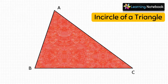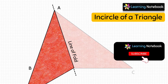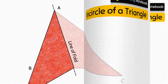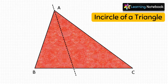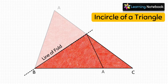Now fold this red triangle along the line passing through vertex A such that side AC falls over side AB. Next, make a crease and unfold the paper. In the next step, fold the paper along the line passing through vertex B such that side AB falls over side BC. Then make a crease and unfold the paper.